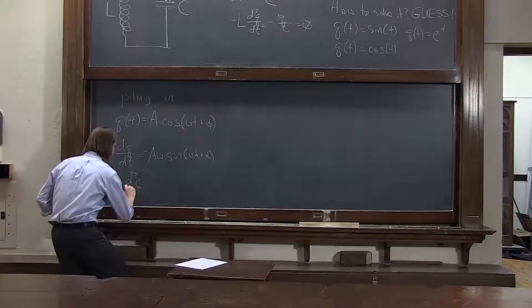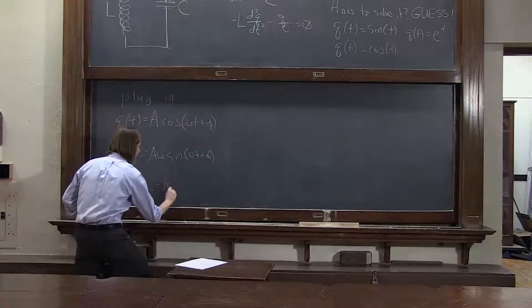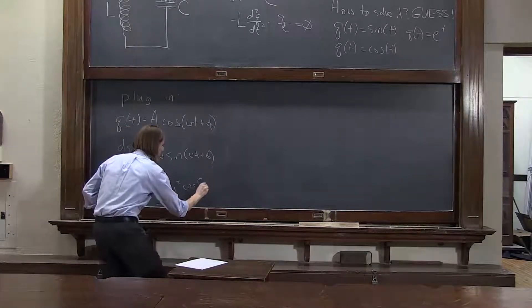And the second derivative, dq/dt sine cosine. Another omega comes out, minus A omega squared cosine omega t plus phi.